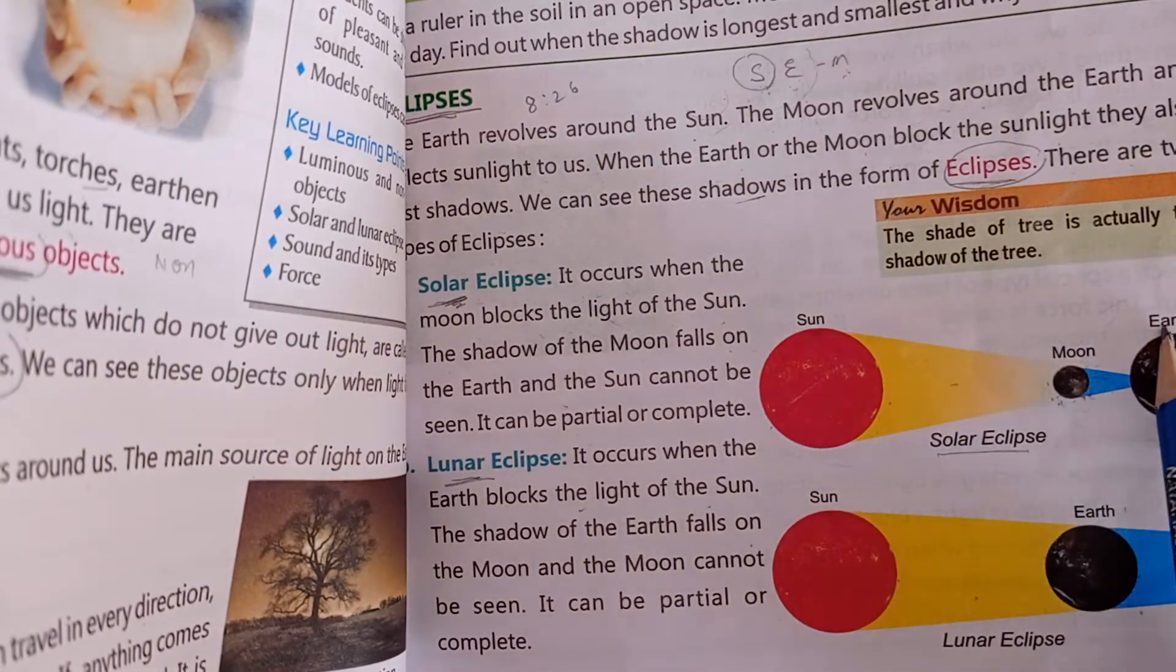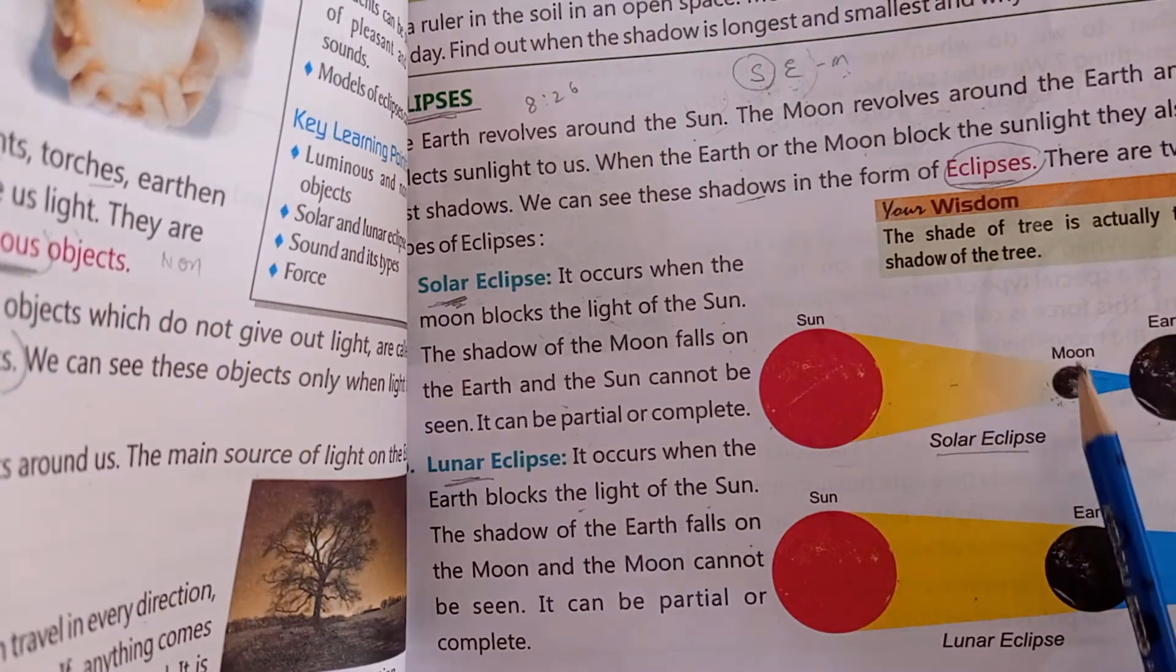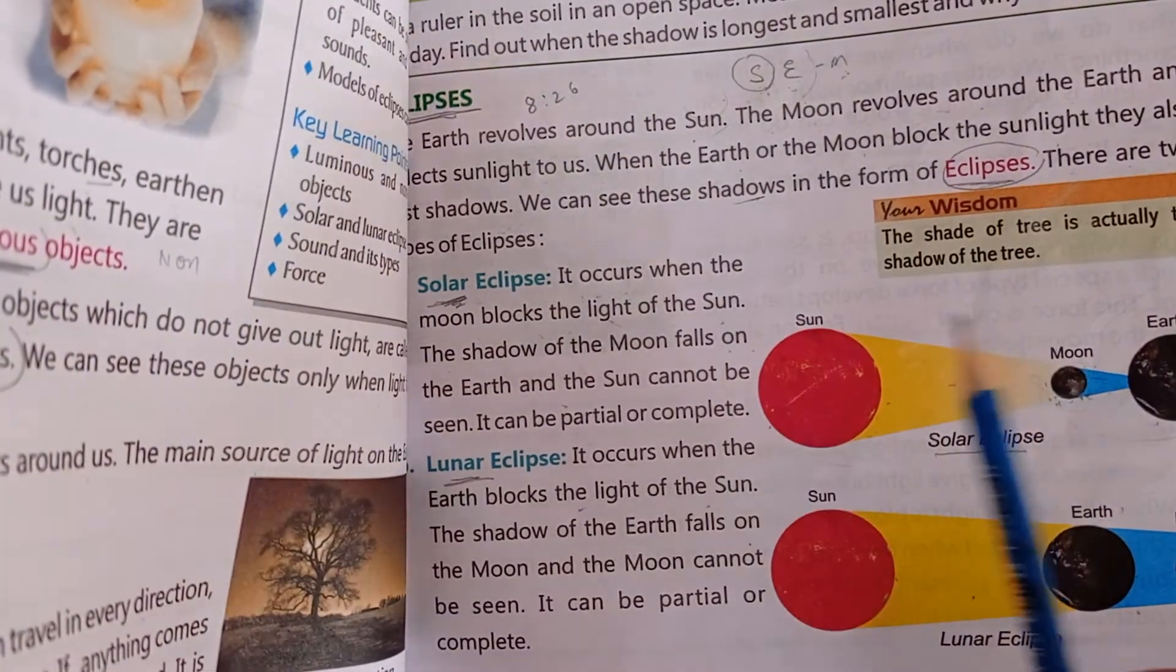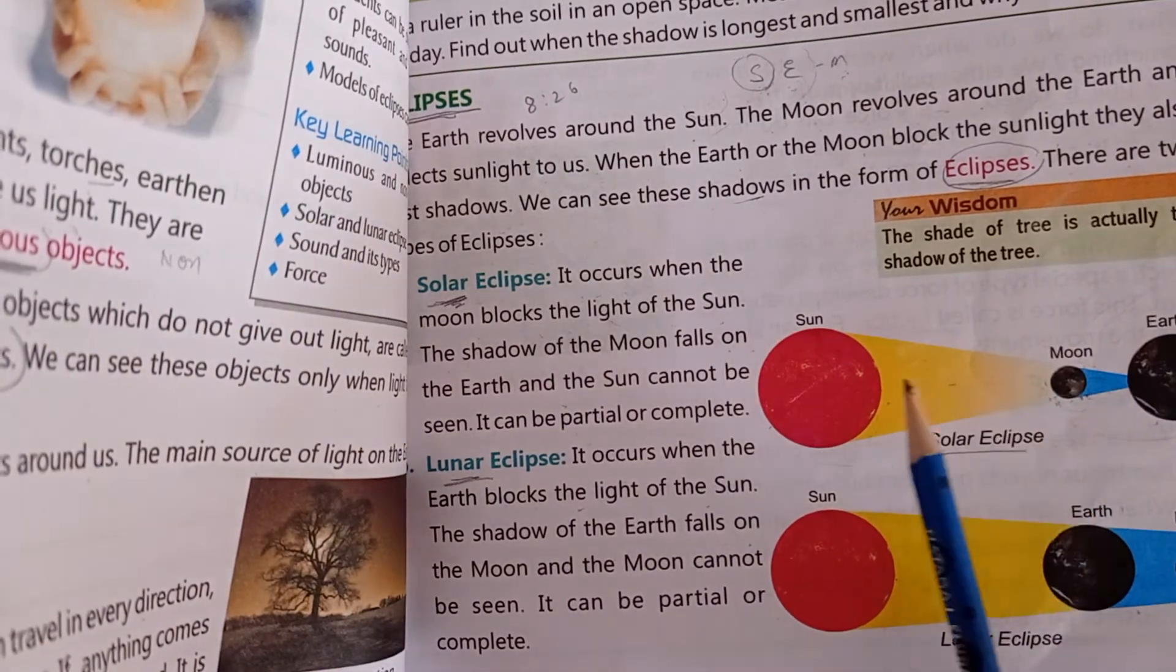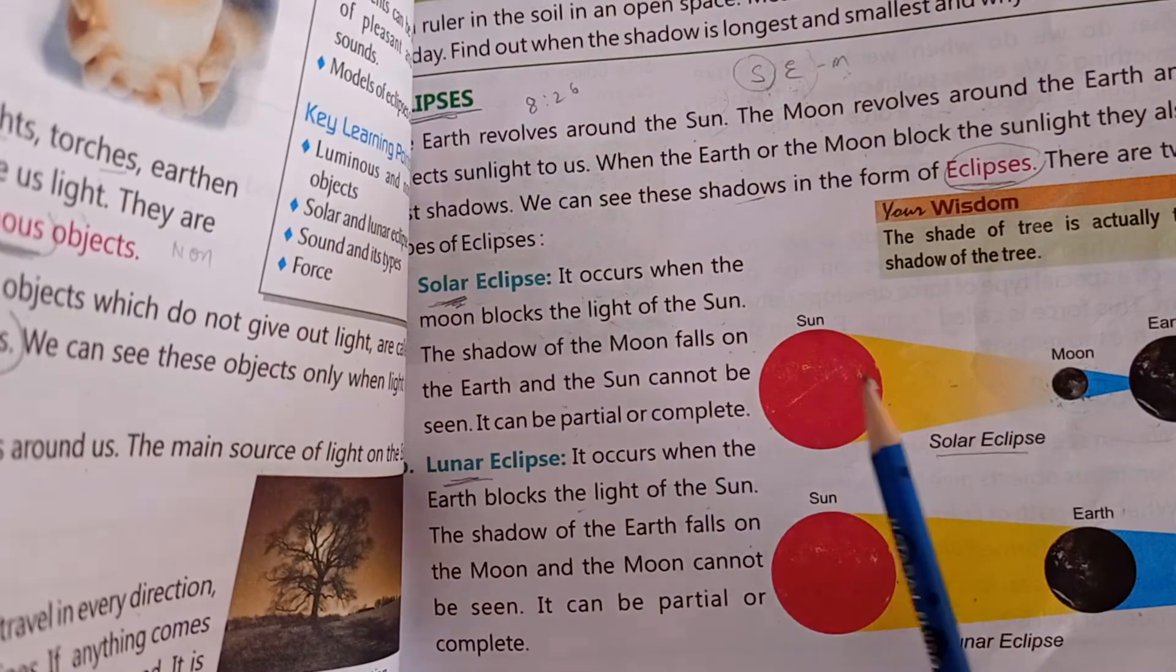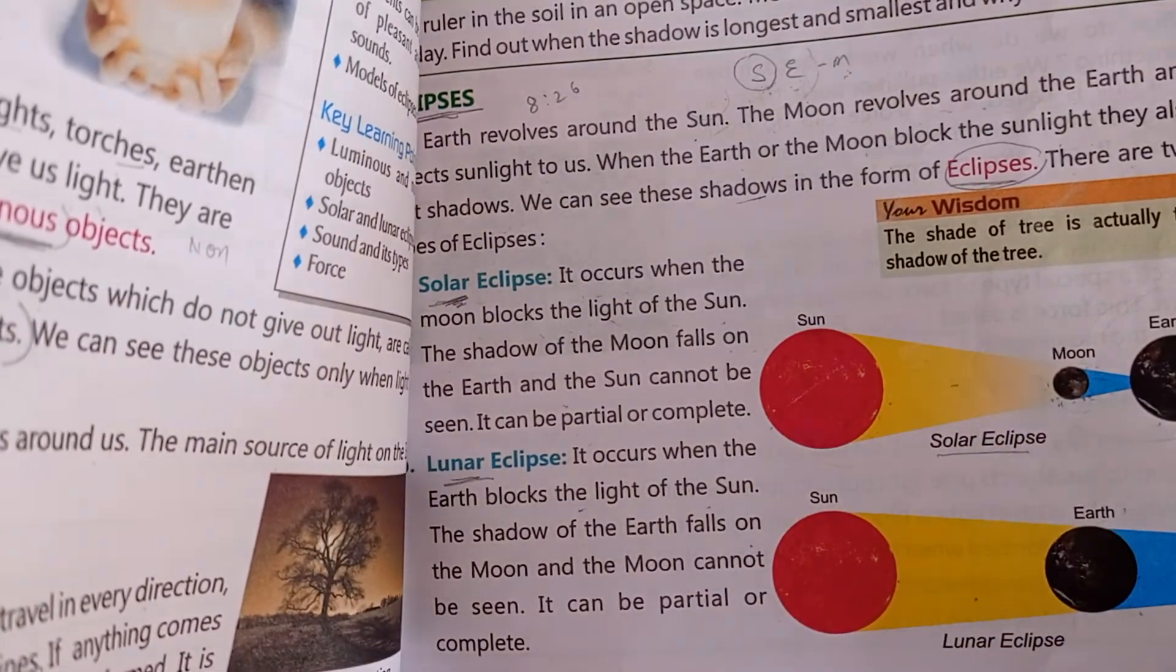What is a solar eclipse? This is our earth, this is our sun, the sun is at the bottom. The moon is between the sun and earth. The moon blocks the light of the sun, so it doesn't come to the earth. Which eclipse is this? The solar eclipse.